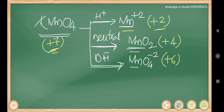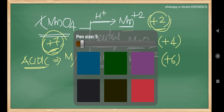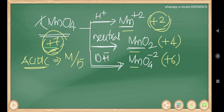In acidic medium, the change in oxidation state goes from +7 to +2, so the change is 5. Therefore, the equivalent mass in acidic medium is molecular mass divided by 5. In neutral medium, the change is from +7 to +4, which is a change of 3.